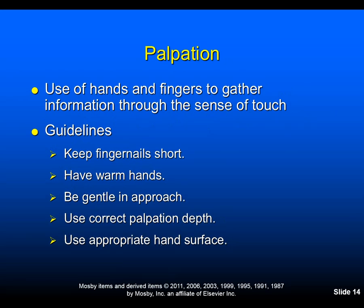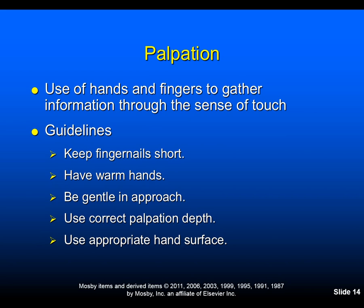Palpation involves the use of hands and fingers through the sense of touch, and certain parts of your hands are better than others for specific types of palpation. The palm surface and the finger pads are more sensitive than the fingertips and should be used whenever discriminatory touch is needed. The guidelines for palpation include keeping your fingernails short, having warm hands, being gentle in your approach, using the correct palpation depth, and using the appropriate hand surface. The ulnar surface of the hand is the most sensitive area for distinguishing vibration, and the dorsal surface is best for estimating temperature — though this provides only a crude measure best used to detect temperature differences between body parts.